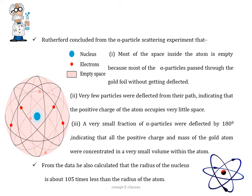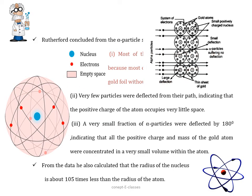From similar reasoning, Rutherford concluded from the alpha particle scattering experiment that most of the space inside the atom is empty because most of the alpha particles passed through the gold foil without getting deflected. So there is a lot of empty space within an atom. Very few particles were deflected from the path, indicating that the positive charge of an atom occupies a very little space. A very small fraction of alpha particles were deflected 180 degrees, indicating that all the positive charges and mass of the gold atom were concentrated in a very small volume within the atom. From this data, he found out that there was a nucleus which consists of positive charge and he calculated the radius of the nucleus is about 105 times less than the radius of an atom.